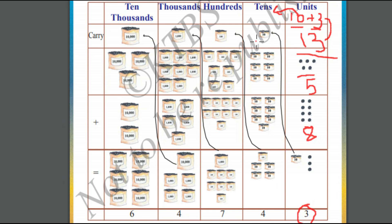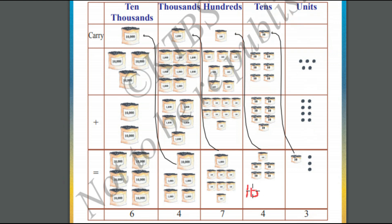Now in the tens place, we have got an extra bag of beads from the carry. In the tens place of the first number, we have 60 beads, and in the second number we have 70 beads. 60 plus 70 is equal to 130. Remember, we also got a carry of 10. So 60 plus 70 plus 10 is equal to 140. We cannot represent 140 in the tens place. So we will write it as 100 plus 40 — we write 4 in the tens place and carry 100 to the hundreds place.